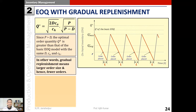The factor p/(p minus d) is necessarily greater than one, so the q* obtained here will always be greater than the basic EOQ q*. Therefore, gradual replenishment means a larger order size and hence fewer orders. Given the same demand, holding cost, and ordering cost, if a system switches from basic EOQ to EOQ with gradual replenishment, it would go for larger order sizes and, given the same demand, fewer orders per unit time.